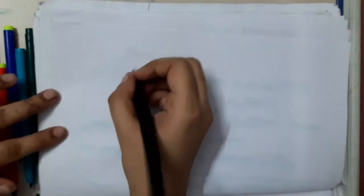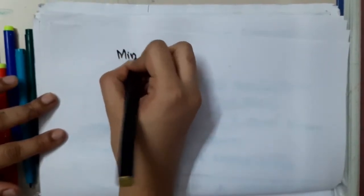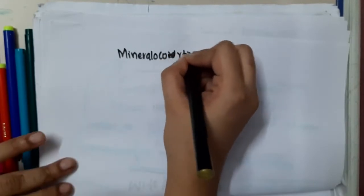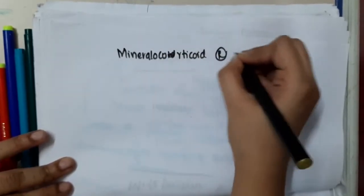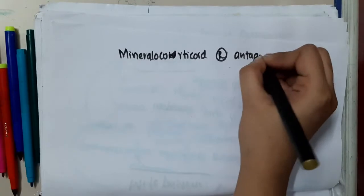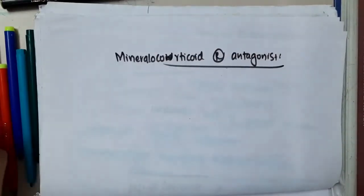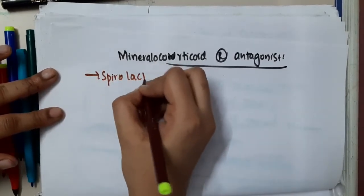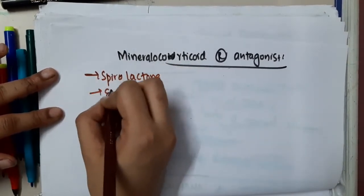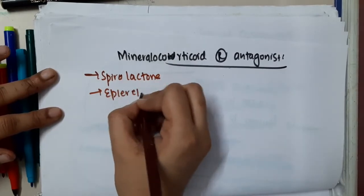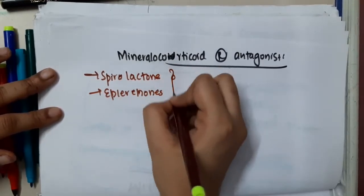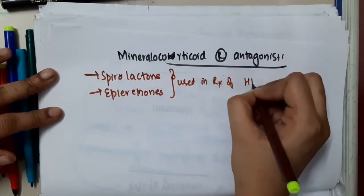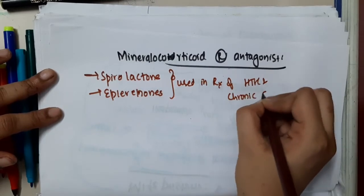Hello friends, let us now learn the list of mineralocorticoid receptor antagonists. Mineralocorticoid receptor antagonists are mainly three. They are spironolactone and eplerenone. These are important mineralocorticoid receptor antagonists, used in the treatment of hypertension and also in chronic congestive heart failure.